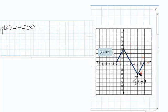So what's going to happen when we take every positive y and change it to a negative y is that it's going to flip over the x-axis. This is what's called a vertical reflection.